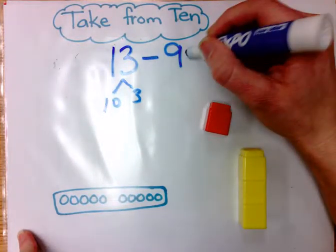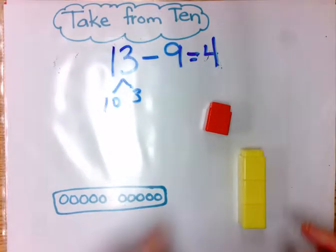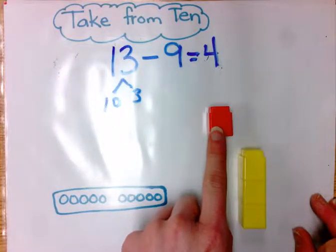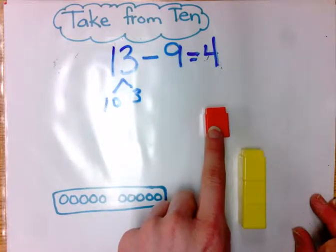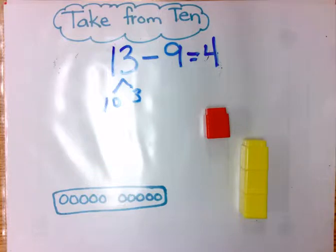13 minus 9 equals 4. I have 1 left when I took 9 from 10, and then my 3 stayed the same.